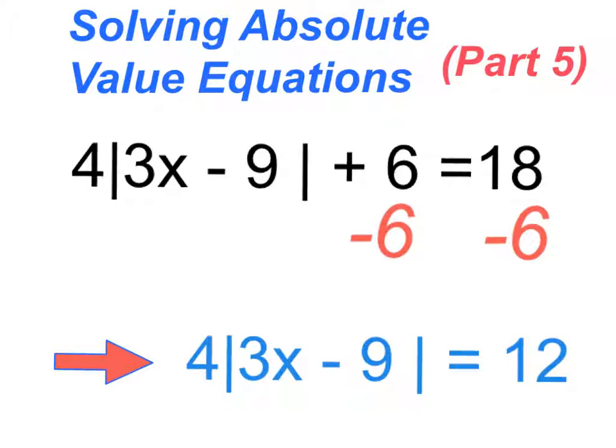First thing that we have to do, anytime you have a number being added or subtracted after the absolute value symbol, you do this first. So in this problem, notice I've taken six away from both sides. Then what it does is it breaks down to being four times the absolute value of three X minus nine on the left and 12 on the right.